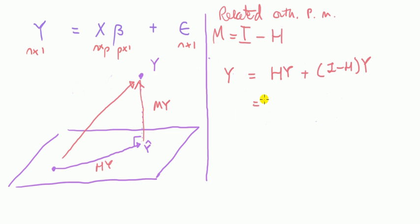In other words, Y is equal to HY plus MY. Let's just write I minus H, MY. So this is in the column space spanned by X, X hat. This is orthogonal. And we have a special name for this, don't we?